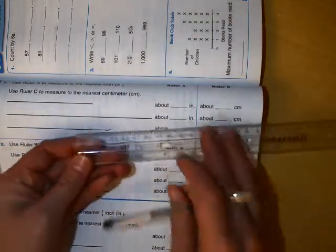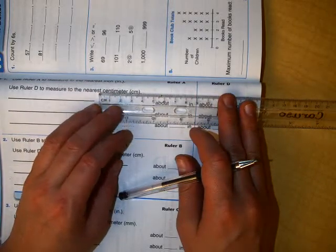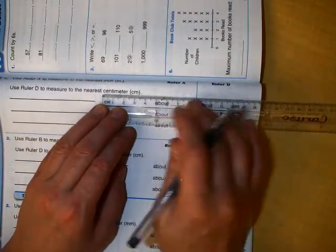The centimeters, however, are about half as small as an inch. They're about half the size. There's two and a half centimeters in one inch.